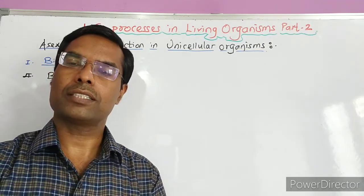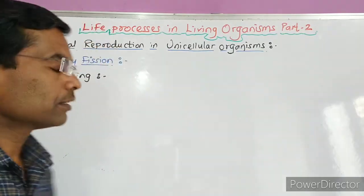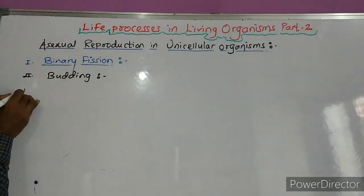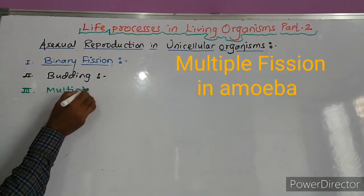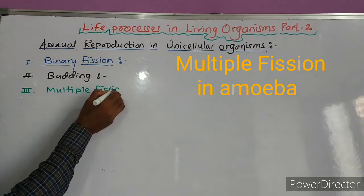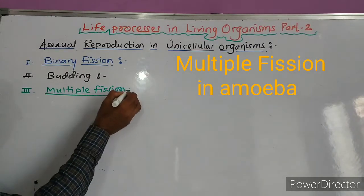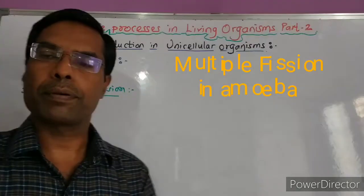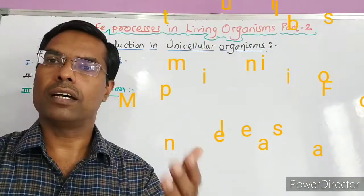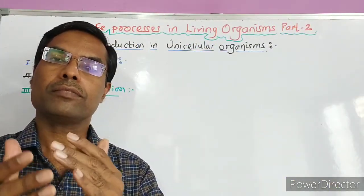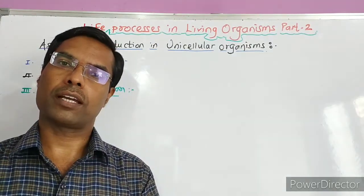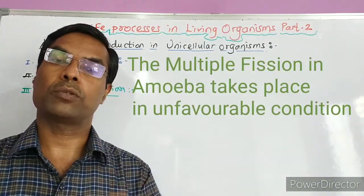Next, the third method is called multiple fission. And it takes place in amoeba in unfavorable conditions. In unfavorable conditions, amoeba can withdraw the pseudopodia. It forms a hard covering around it.